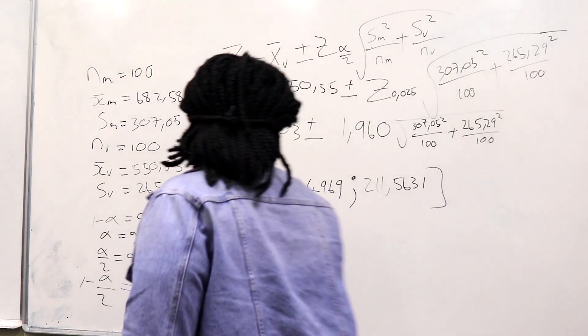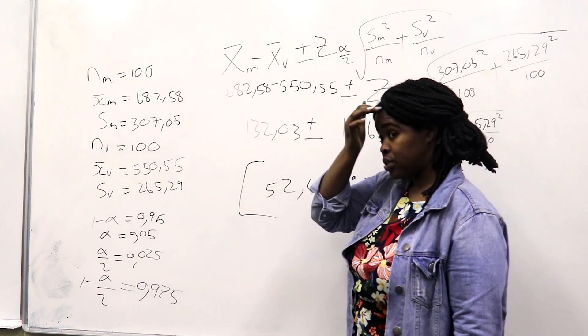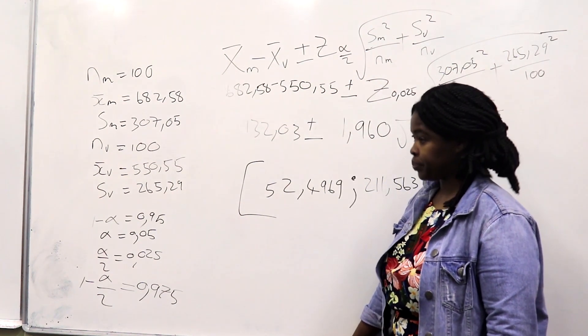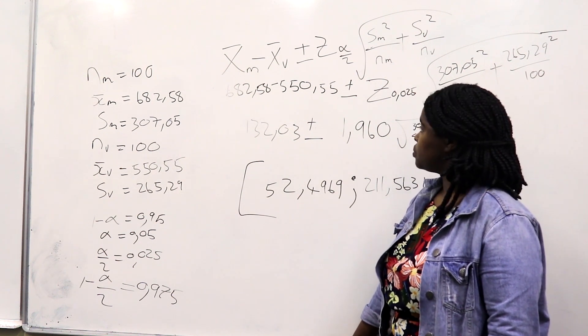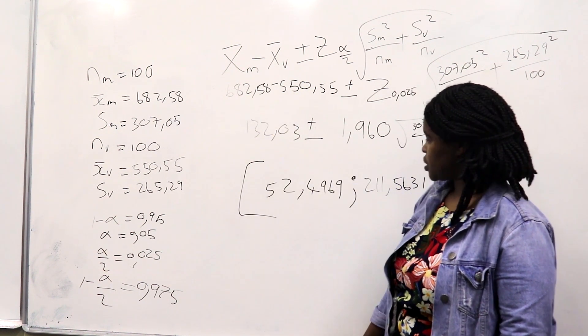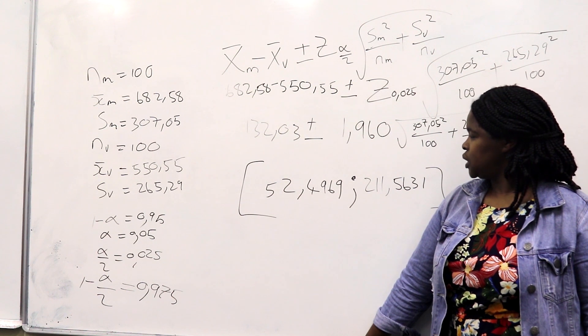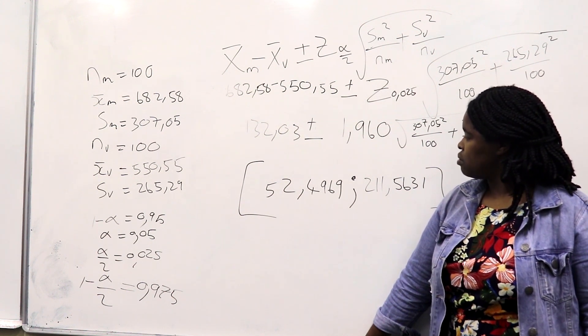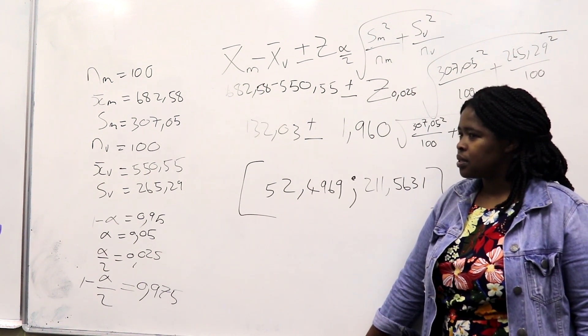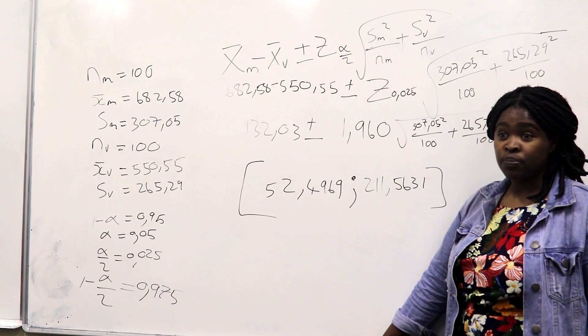Can I jump in? We could have started with the other one, right? Like, if we switched it around. Can someone switch around? If you did switch around, would your conclusion not be the same but not the confidence interval? Because you'd be saying that the MasterCard is less than something. Can someone quickly switch so we can see? Negative 211.5631 and negative 52.4969. They're supposed to be both negative answers of the same kind. They're the same, they're just negative.